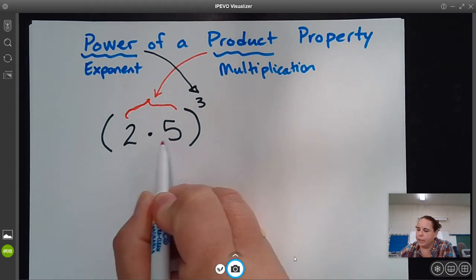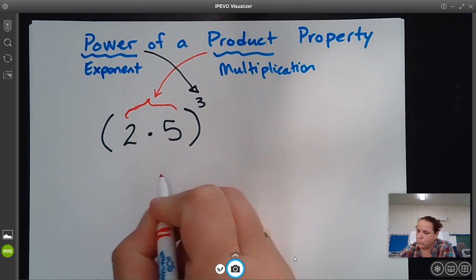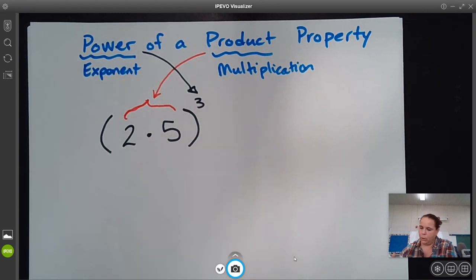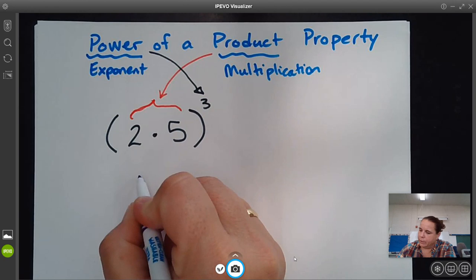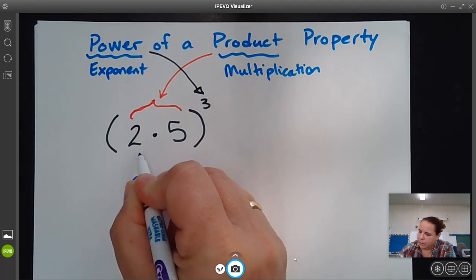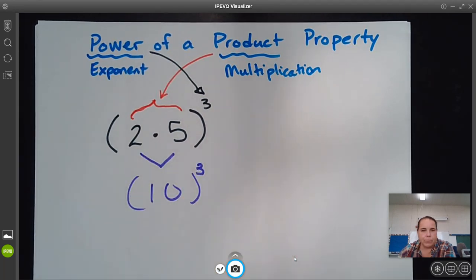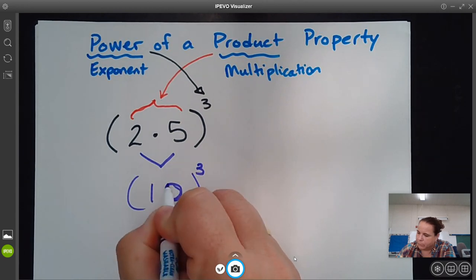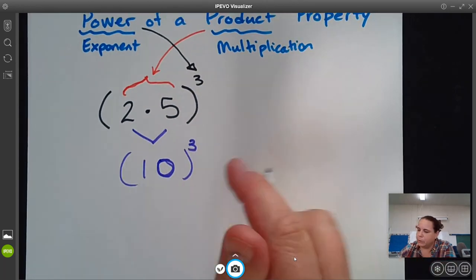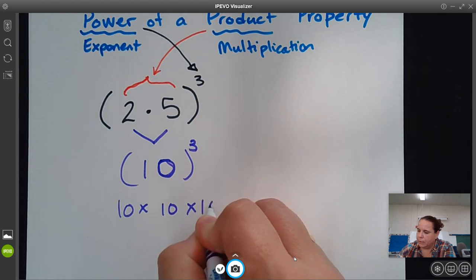So we can see that 2 times 5 is 10. So one way that we could go with this is we could change that. 2 times 5 is 10, right? And then the third power is right here, so then we have 10 to the third power, which is really just 10 times 10 times 10.